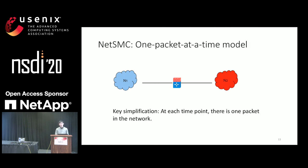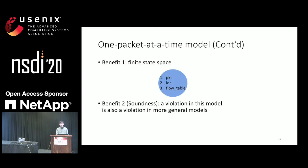So in this work we make an even stronger simplifying assumption: we propose a one-packet-at-a-time model. The key idea is that at each time point we only consider one packet in the network. For instance, suppose the blue packet is sent from internal network N1 and reaches the outside world N2. Only when that packet leaves the network do we start to consider the next packet, such as the red one. This simplified model gives us immediate benefits.